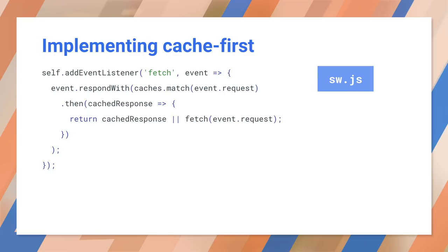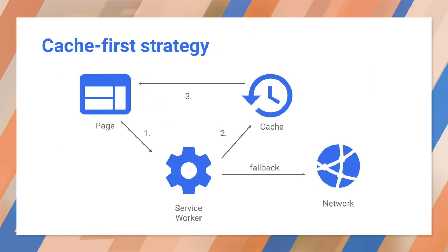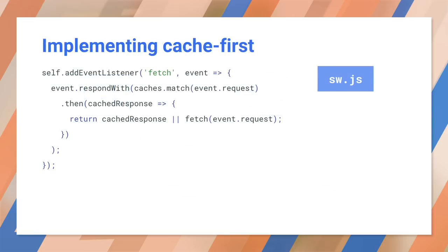How should we respond to this event? We need to find a file we cached earlier and return it. caches.match takes the fetch request and returns the matching result from the cache. But if the file isn't in the cache, caches.match will return null — and that's not good. What we really want is to try the cache first, and if the file is missing, go ahead and try the network. This is called the cache-first strategy. If the match returns null, go ahead and fetch the request from the network. The two vertical bars are the logical OR operator — it evaluates and returns the left-hand side unless it's null or false; otherwise it evaluates and returns the right-hand side.